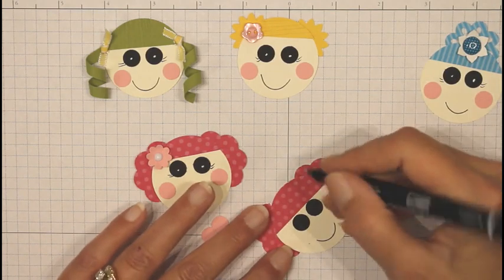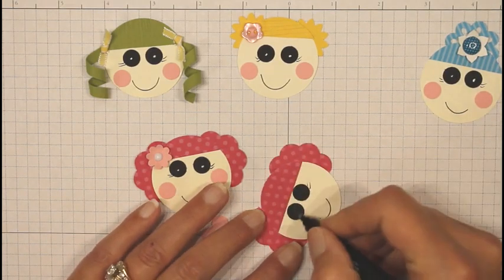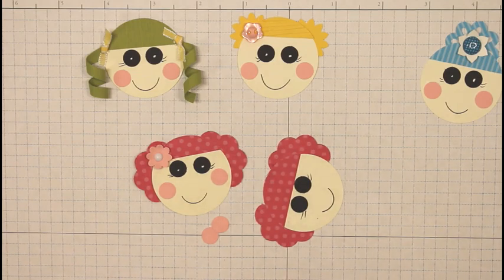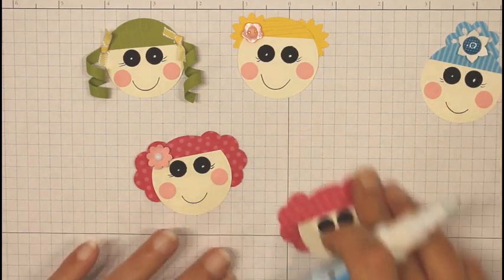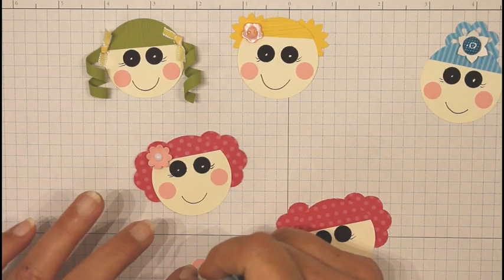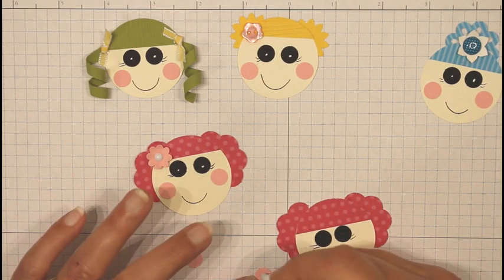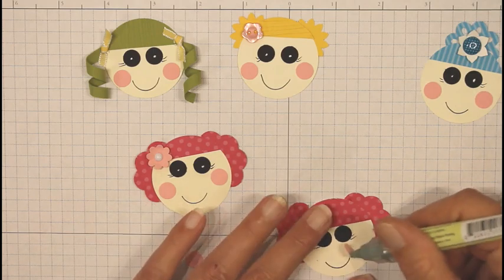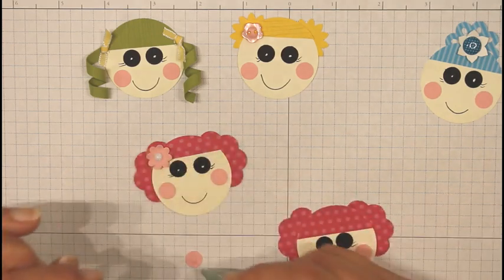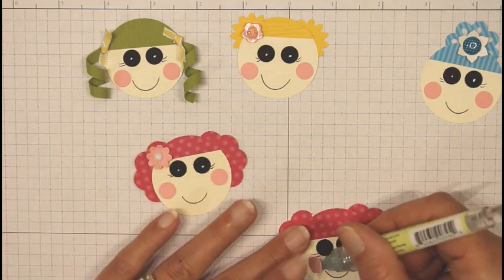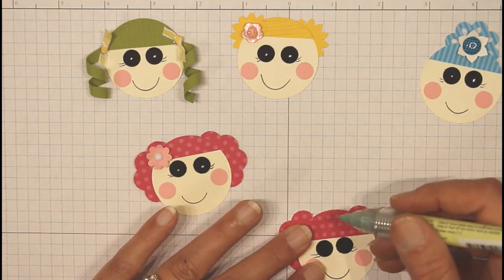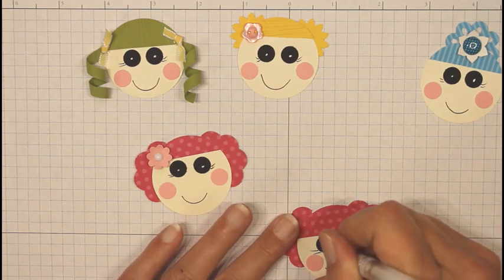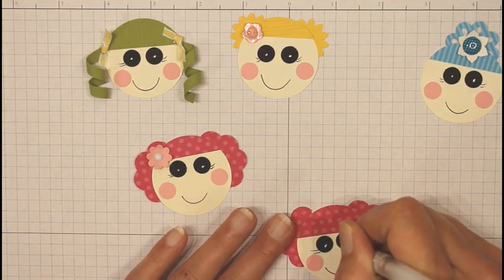Then when we've got our pen out, I'll give her a couple eyelashes. I'll attach the cheeks. Taking my white gel pen, putting just a little sparkle in her eyes.